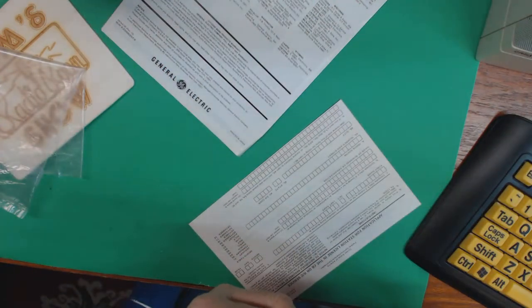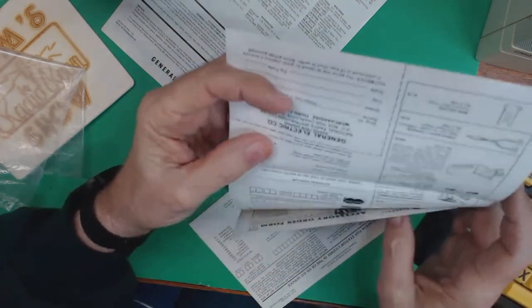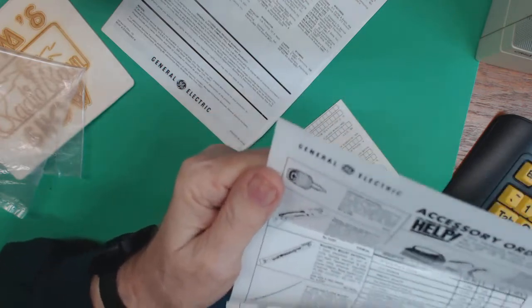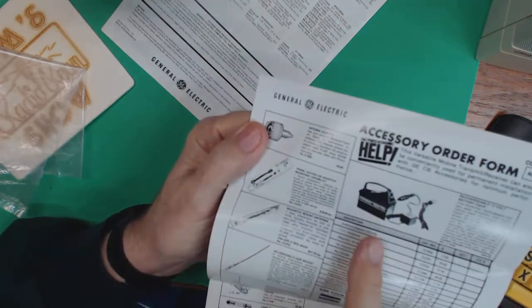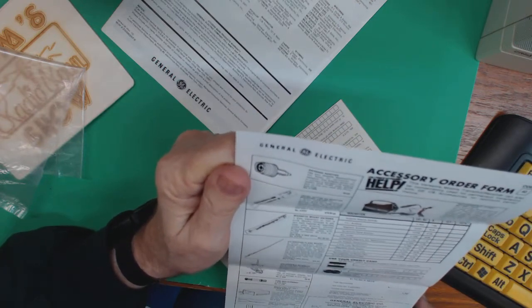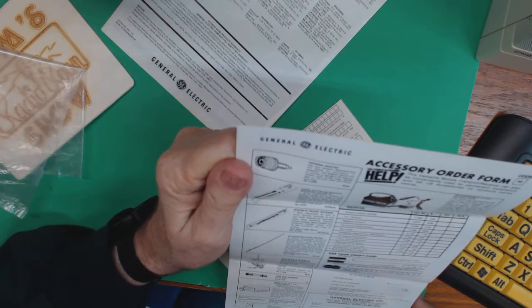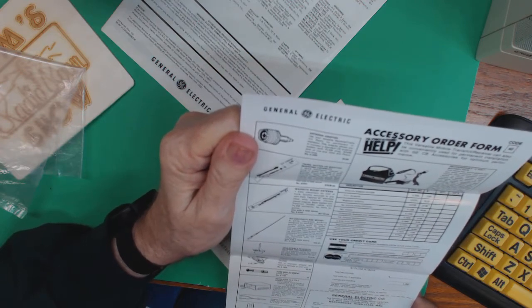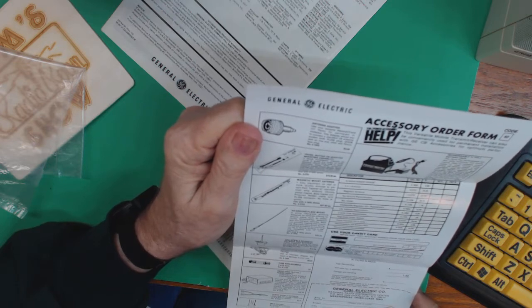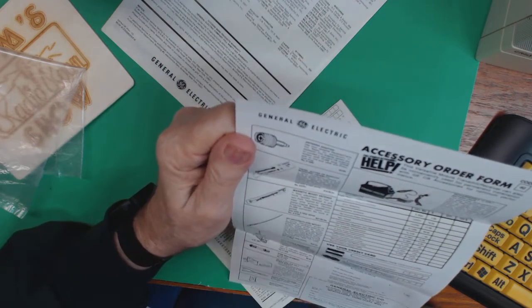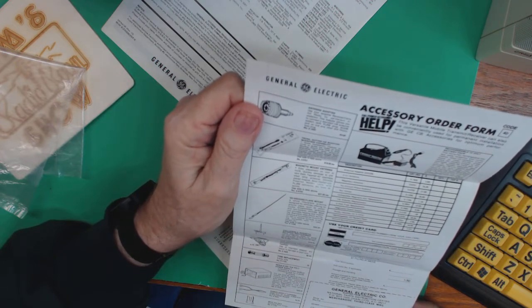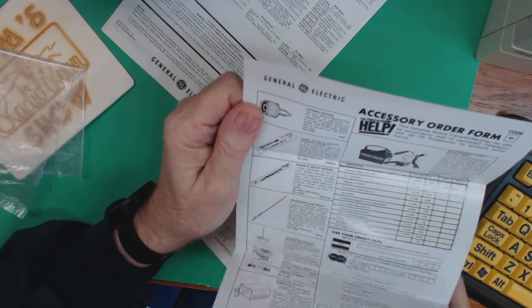This is an order form for accessories. What kind of accessories could you get? You could get a battery pack, right there is a battery pack. Antenna adapter, different antennas, replacement parts, a regulated DC power supply, a mic holder. And this was in Charlotte, North Carolina.